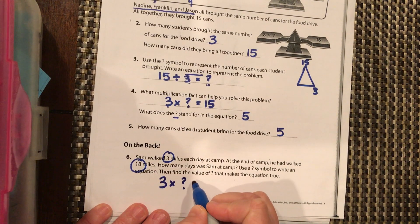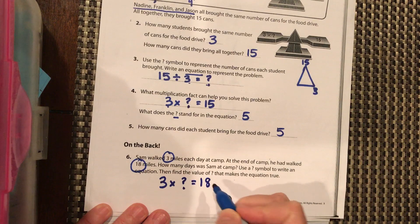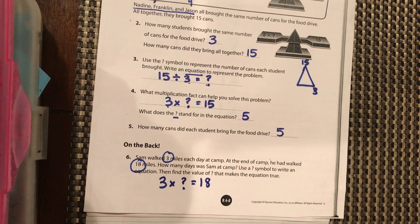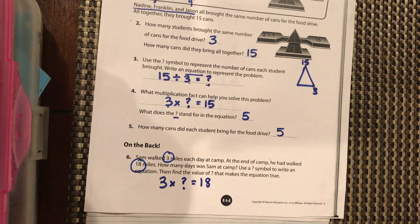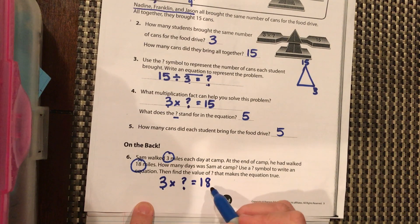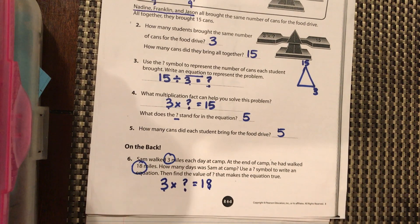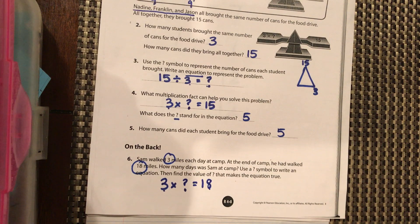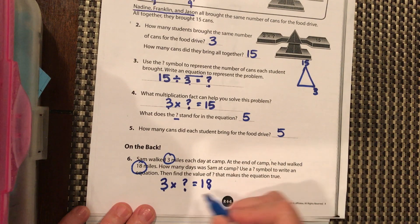So 3 miles each day times we don't know how many days will equal a total of 18 miles. So 3×? = 18. So work that out, and it should be...